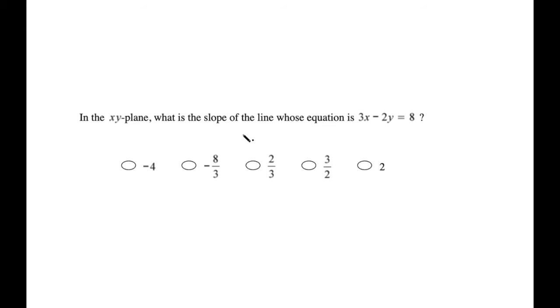So when we see that we're talking about the slope of a line in an x-y plane, immediately we should think of the y equals mx plus b equation. This describes a line where m represents the slope and b represents the y-intercept, but that's not important. We care about the slope.